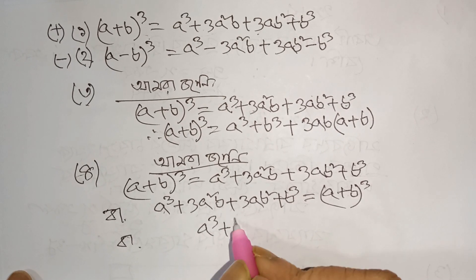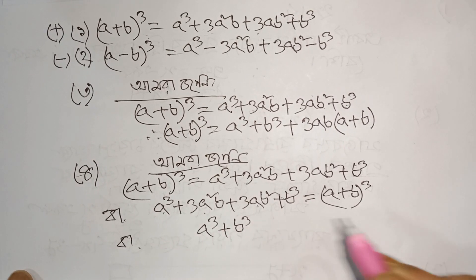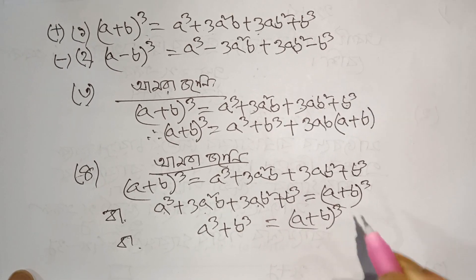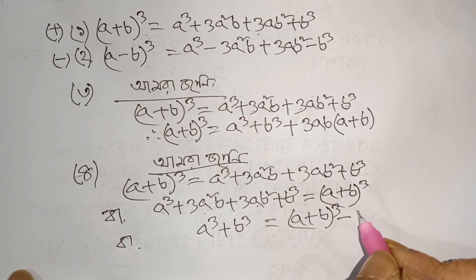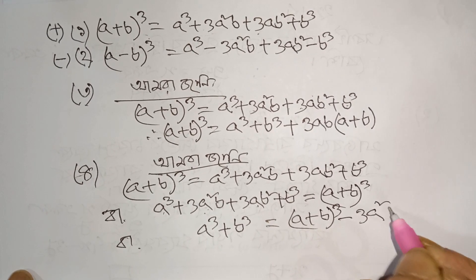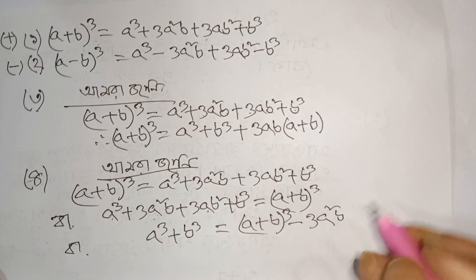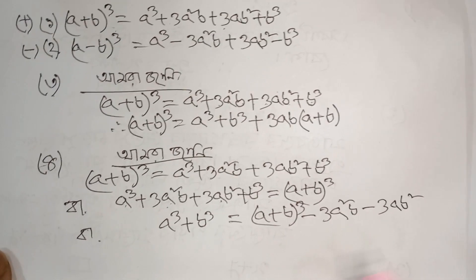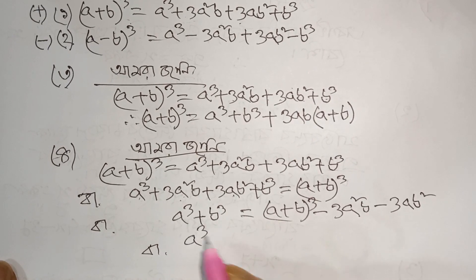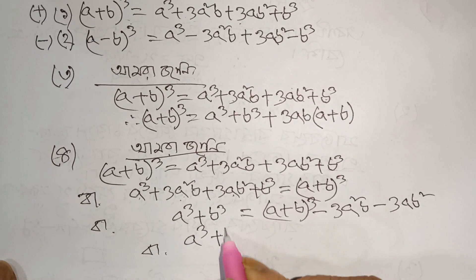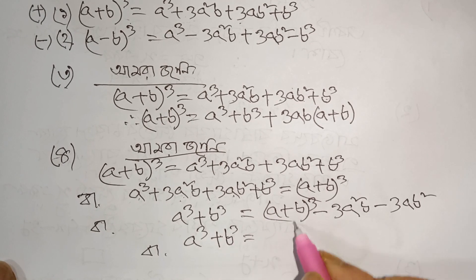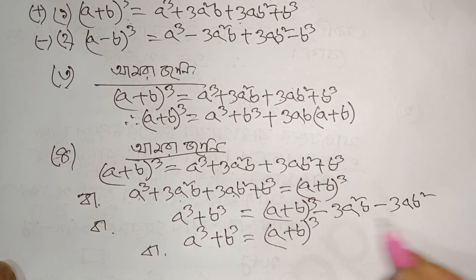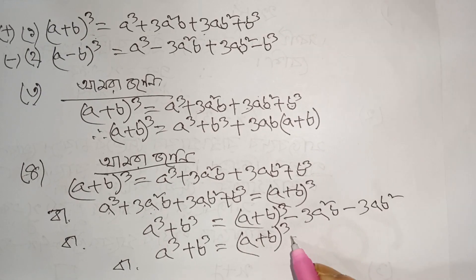a cube plus 3a square b plus 3a b square plus b cube. a cube plus b cube. So a cube plus b cube equals a cube plus b cube — a square b. This is a very strong tool.